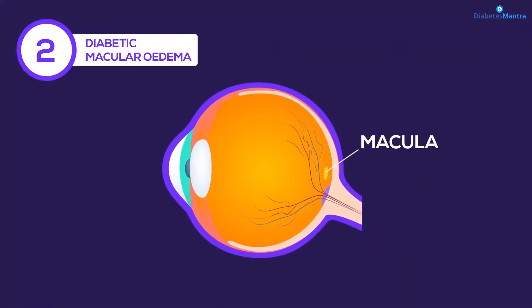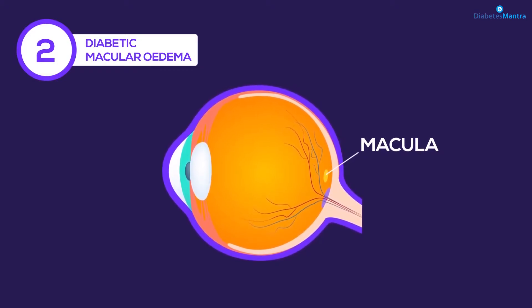Second, diabetic macular edema. The part of your retina that you need for reading, driving and seeing faces is called the macula. Diabetes can lead to swelling in the macula, which is called diabetic macular edema. Over time, this disease can destroy the sharp vision in this part of the eye, leading to partial vision loss or blindness. Macular edema usually develops in people who already have other signs of diabetic retinopathy.